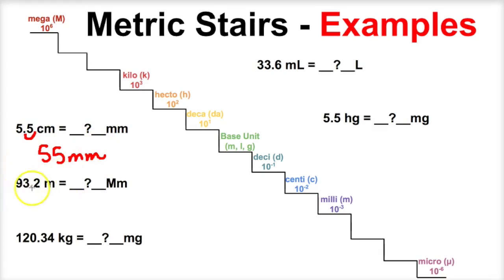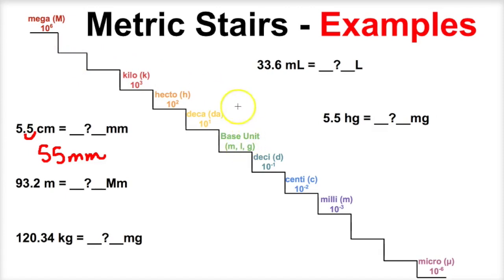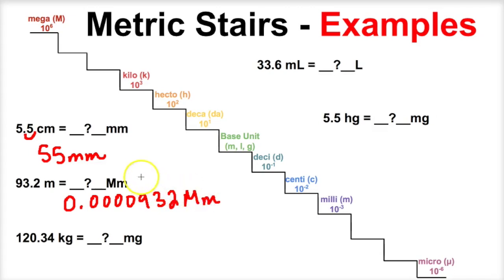Let's take a look at this next problem. We have 93.2 meters — meters is a base unit — and we want to figure out how many megameters it is. Capital M in the metric prefixes means mega. So if we take a look, we're starting at the base unit. How many steps? One, two, three, four, five, six — so that is going to be six times we move our decimal. We're moving up and to the left, so we move this decimal six times to the left, and we will end up with 0.0000932 megameters. So 93.2 meters is the same thing as 0.0000932 megameters.